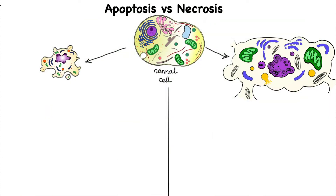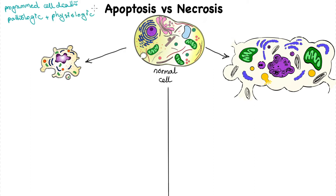In this short video, we are going to go over the differences between apoptosis and necrosis. Apoptosis is a programmed cell death which can happen both in pathologic and physiologic instances, as opposed to necrosis which happens almost exclusively in pathologic situations.